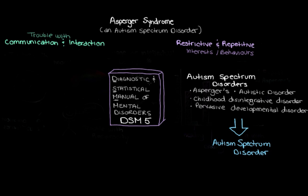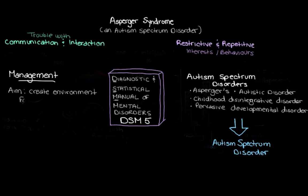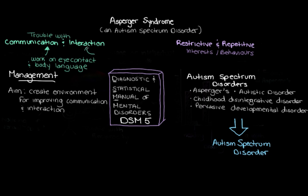Whether someone is diagnosed with Asperger's or Autism Spectrum Disorder, the management is very similar. There isn't any medication or specific plan to manage Asperger's, and because everyone is very different, management plans can vary a lot. The main goal of management is to get parents, family members, and teachers to create an environment that allows the child to work on improving their communication and interaction skills — encouraging eye contact, understanding and using body language, and emphasizing social conventions like sharing, smiling, and greeting people on a daily basis.